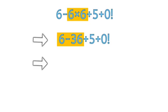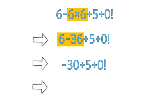Now we have minus 30 plus 5 plus 0 factorial. Now minus 30 plus 5 will give minus 25. Now the expression becomes minus 25 plus 0 factorial.